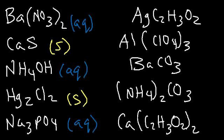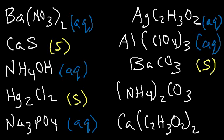Acetates are always soluble, so we're going to put aqueous. Perchlorates are always soluble. Barium carbonate — carbonates are generally insoluble and barium is not an exception, so this is going to be a solid. Ammonium carbonate — ammonium is always soluble, so ammonium carbonate is aqueous. And calcium acetate — acetates are always soluble. If you know the ions that are always soluble, you can get like 60 or 70% of these problems correct. Know the exceptions and you should be okay for your next chemistry exam. That's it for this video. Thanks for watching, and have a great day.